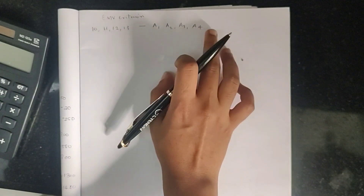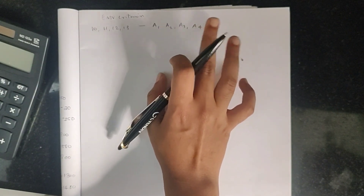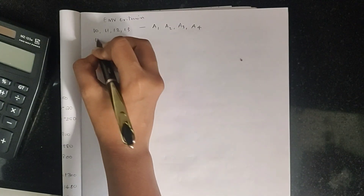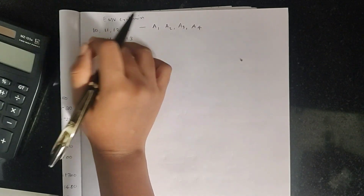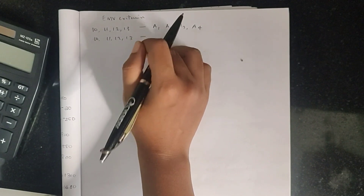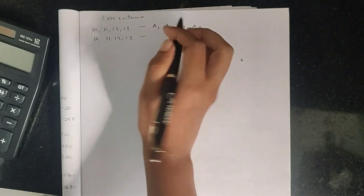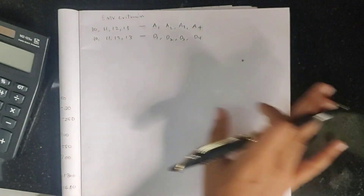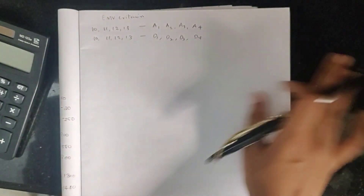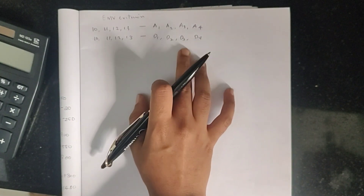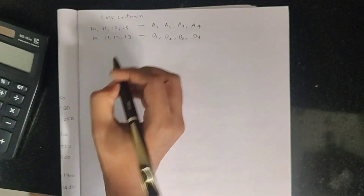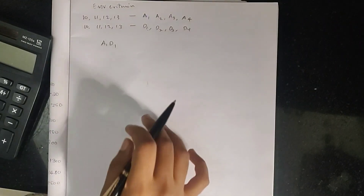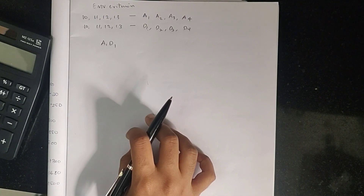The alternatives A1, A2, A3, and A4 represent the number of copies ordered. The states of nature (demand levels) are denoted D1, D2, D3, and D4, corresponding to demands of 10, 11, 12, and 13 copies. These are the main events. We will now construct the pay-off table.